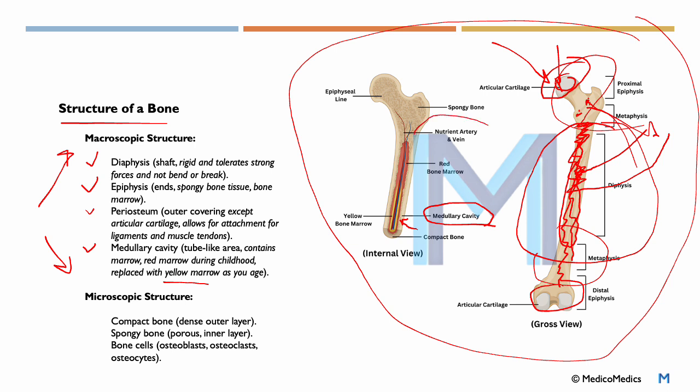We have a lot of nutrients coming from arteries and veins to our bones. In the microscopic structure, we talk about compact bone, so dense outer layer, spongy bone which is porous inner layer, and bone cells like osteoblasts, osteoclasts, and osteocytes. There is no need to memorize all of this right now, just familiarize yourself with the structure of a bone.